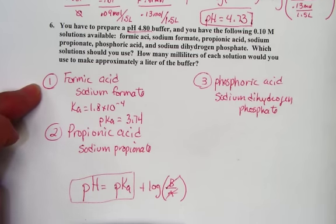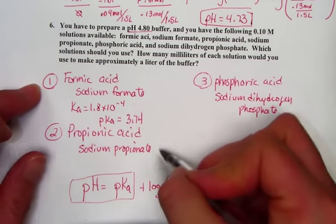I'll do the same for propionic acid. Propionic acid, 1.3 times 10 to the negative fifth.